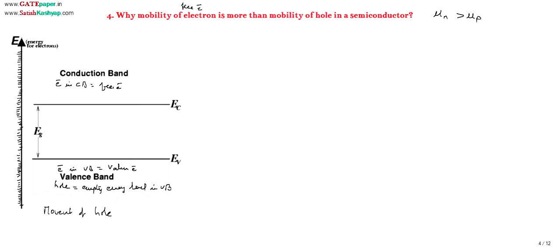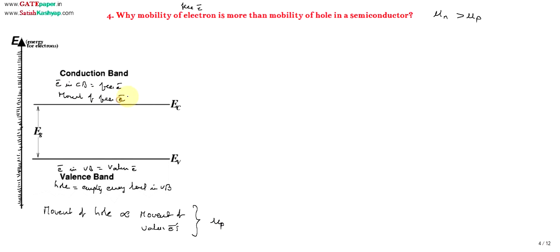So the movement of holes is directly related to the movement of valence electrons. Movement of valence electrons is related to hole mobility μp, and movement of free electrons is related to electron mobility μn. Now we will see why μn is greater than μp, but first you must understand what is meant by electron and what is meant by hole.